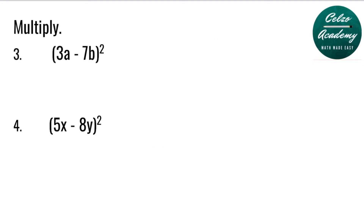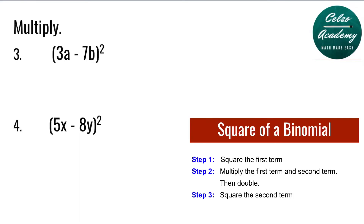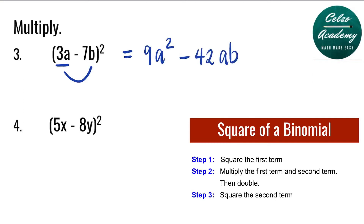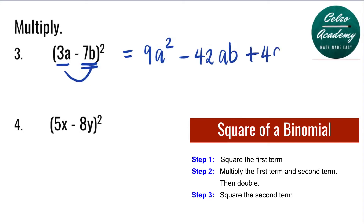Question number 3: 3a minus 7b, to the second power. Step 1: Square the first term — 3a times 3a is 9a squared. Step 2: Multiply the first and the second term, and then double. 3a times negative 7b is negative 21ab; doubling that gives negative 42ab. Step 3: Square the second term — negative 7b times negative 7b is 49b squared.